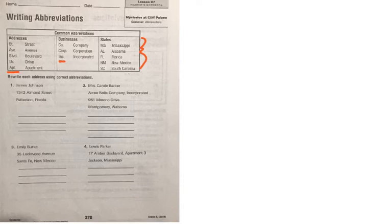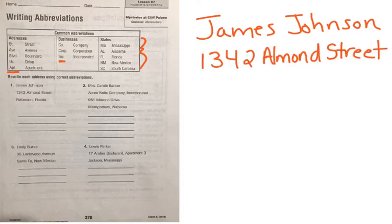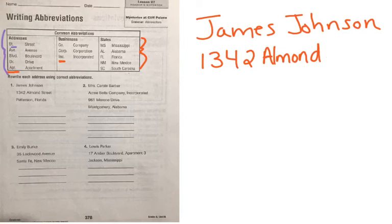Today on this page you're going to be rewriting addresses. On number one, we have James Johnson, and he lives at 1342 Almond Street. Street is one of the words we can abbreviate. So instead of writing out the word street, we look at our abbreviations — street is abbreviated capital S, T, period. So we write S-T, period.